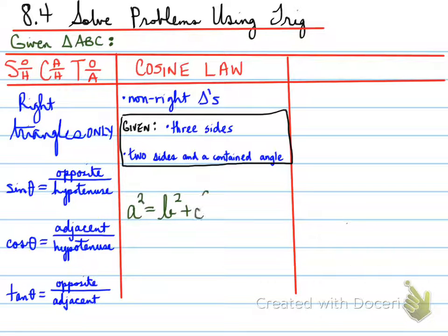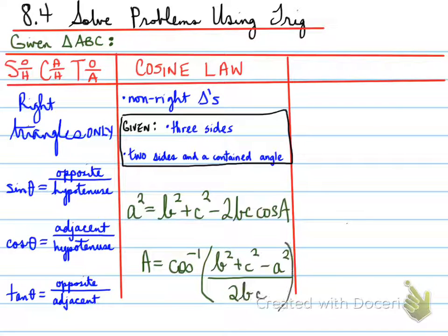And here's a version of the cosine law for sides, and another version of the cosine law for angles. So ultimately, you have to know what you're looking for and use the correct formula. Remember, cosine law can only be used when you're given three sides or two sides and a contained angle.